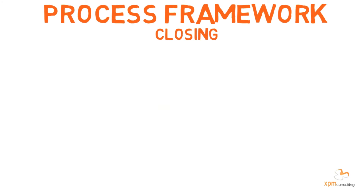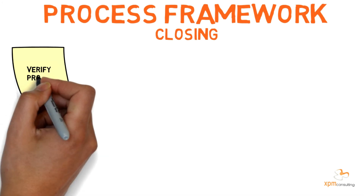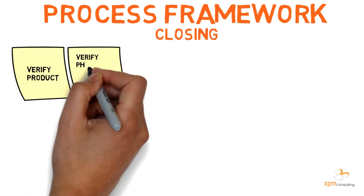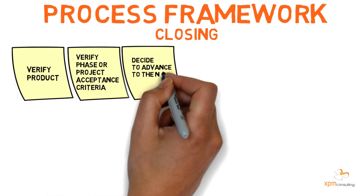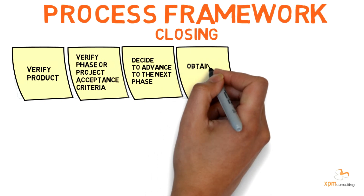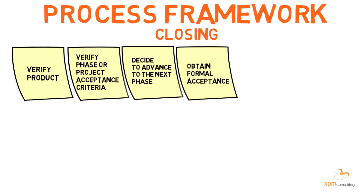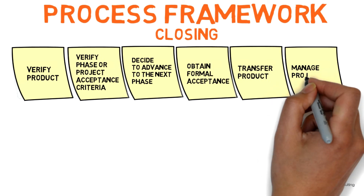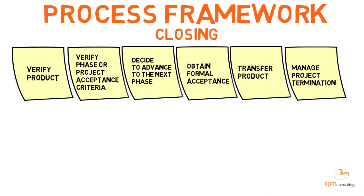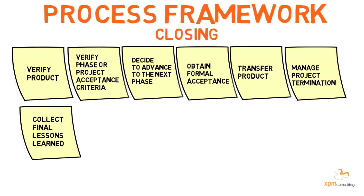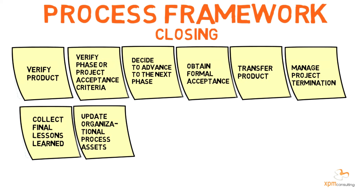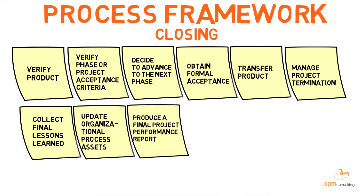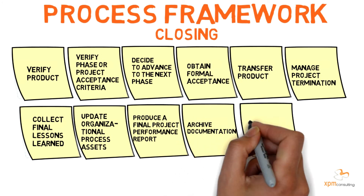While closing, the project management team may: verify if the product was delivered as required; verify if the phase or project acceptance criteria were met; decide whether to advance to the next project phase; obtain formal acceptance to close the project or phase; transfer the product to operations; manage project termination before completion; collect final lessons learned; update organizational process assets with the acquired lessons learned; produce a final project performance report; archive project documentation; and release resources.